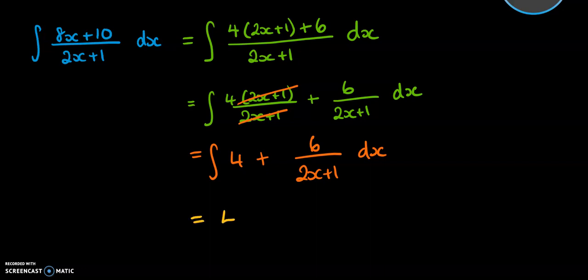So if you integrate 4, you get 4x. And then 6 over 2x plus 1, we have the top is a multiple of the derivative of the bottom. If we differentiate 2x plus 1, we get 2. And the top will be 3 times that much. So just as a side note, if you're not sure about how to do these without fully working it out, try out log of the bottom and see what it gets you.